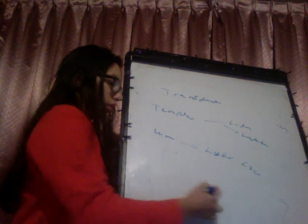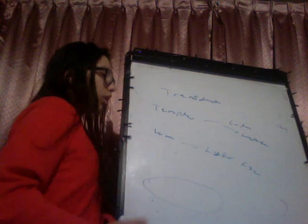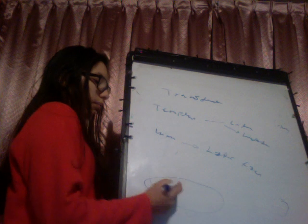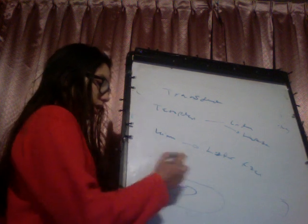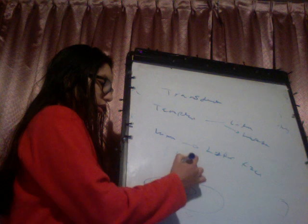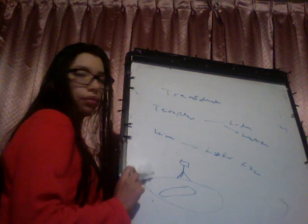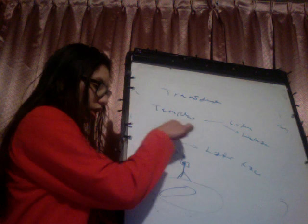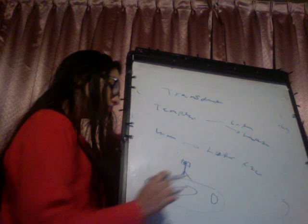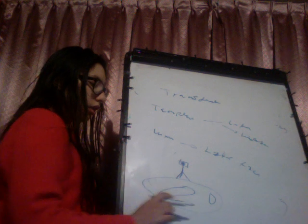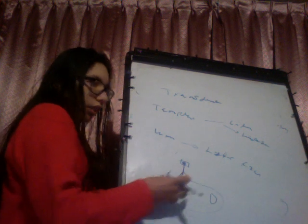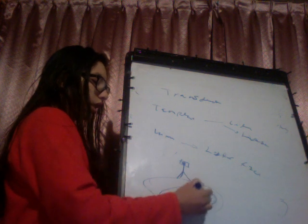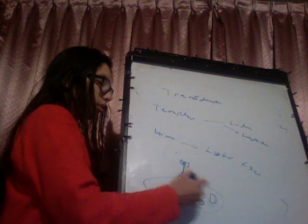Let's begin with a virulent bacteriophage in the lytic cycle. Here is the bacteria and the DNA of the bacteria, and here we have a bacteriophage that is infecting the bacteria. Here is the DNA of the bacteriophage — it is inserted here into the cytoplasm. Then the machinery of the bacteria makes the replication of this DNA, and we have a lot of copies now.